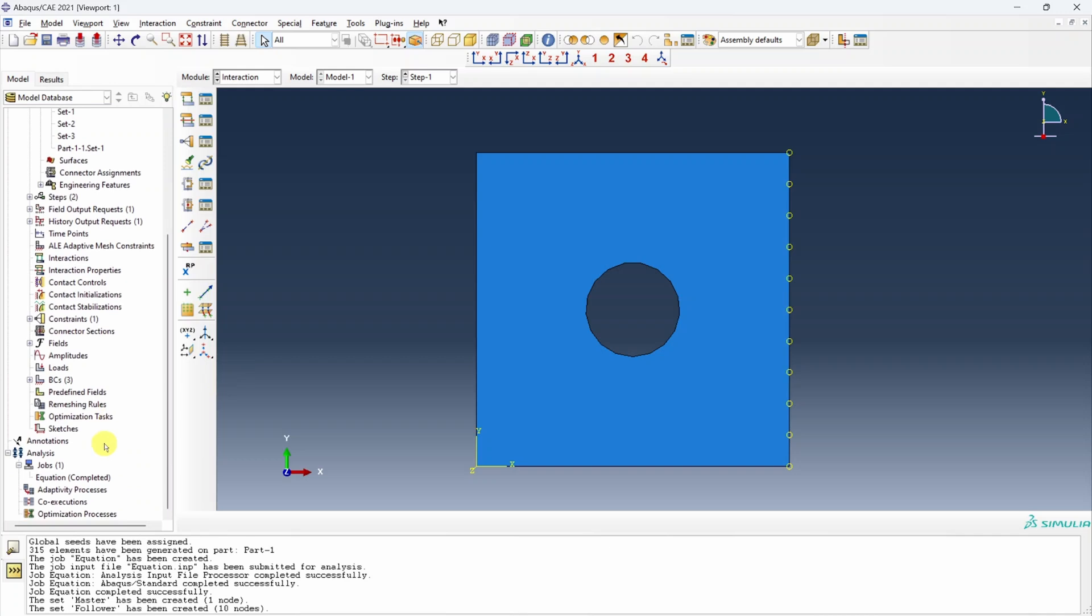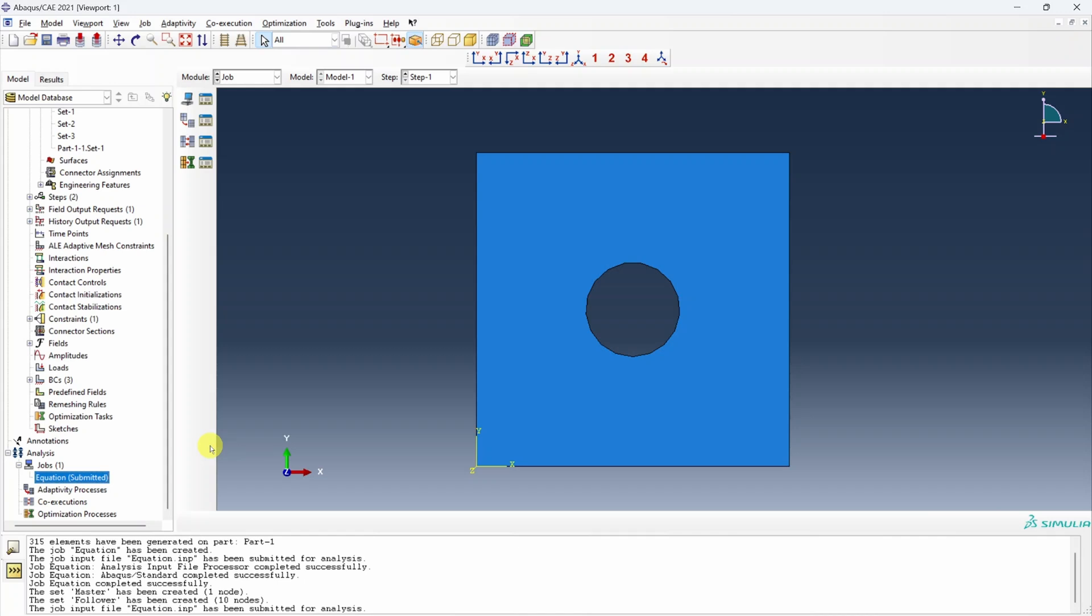And you can see some symbol over here which denotes this edge is now constraint. That's it. Just submit the job again. And hopefully now we will see flat vertical right edge. Again time to put my favorite meme. 20 minutes later. Done.